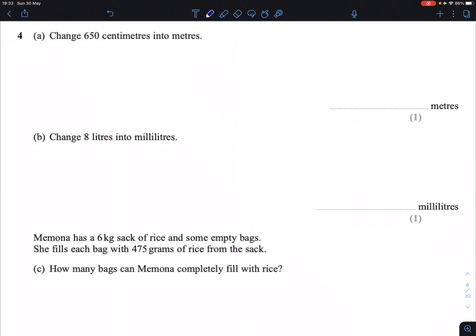Question 4A. Change 650 cm into meters. Whenever you are converting between units of measure, the first thing to do is establish what the link is between them. So there are 100 cm in a meter.